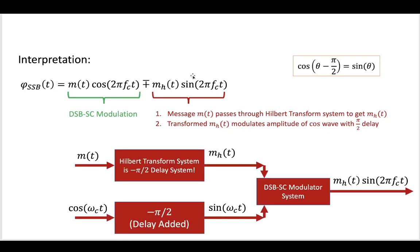If we were to realize this in practice, we would take our message, pass it through a -π/2 phase delay to get the Hilbert transform message, and we would take the cosine wave and pass it through a phase delay system to get the sine wave with our carrier frequency.